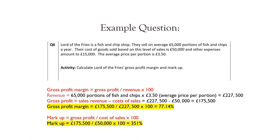Let's look at an example question for markup. Lord of the Fries is a fish and chip shop and they sell an average of 65,000 portions of fish and chips per year. Their cost of goods sold based on this level of sales is £50,000 and other expenses amount to £15,000. Their average price per portion is £3.50. Calculate the Lord of Fries' gross profit margin and their markup.